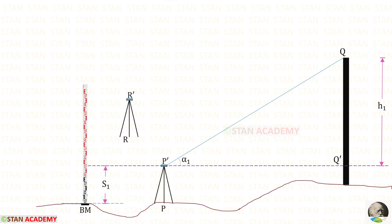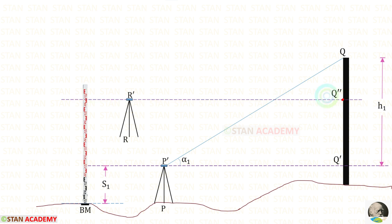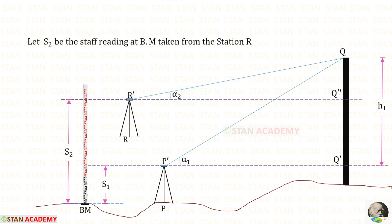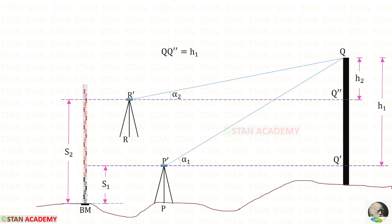Now we make one more station at point R, where we install the theodolite. R dash is the vertical projection of point R. Along the horizontal axis of the telescope we draw a horizontal line, keeping that point as Q double dash. From station R we focus the top of the tower and take the reading of vertical angle alpha 2. From station R we also take the staff reading on the leveling staff, keeping it as S2. The height Q Q double dash is kept as H2.